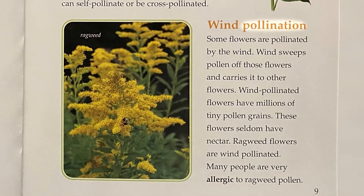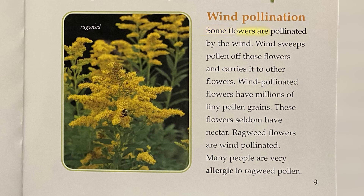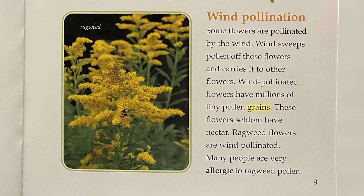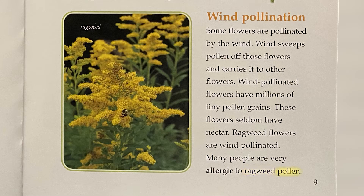Wind-pollination: Some flowers are pollinated by the wind. Wind sweeps pollen off those flowers and carries it to other flowers. Wind-pollinated flowers have millions of tiny pollen grains. These flowers seldom have nectar. Ragweed flowers are wind-pollinated, and many people are very allergic to ragweed pollen.